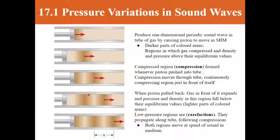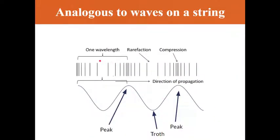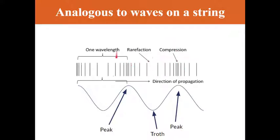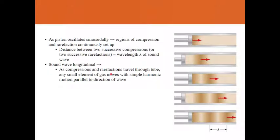We don't talk about troughs here — we talk about rarefactions, regions of low pressure. Rarefactions follow compressions just like peaks follow troughs, and they all move as part of one wave. You can see the similarity between a longitudinal wave and a transverse wave: in a transverse wave we had peaks and troughs, and now in the longitudinal wave we have compressions like peaks and rarefactions like troughs. You can measure any two consecutive compressions or rarefactions to get the wavelength.